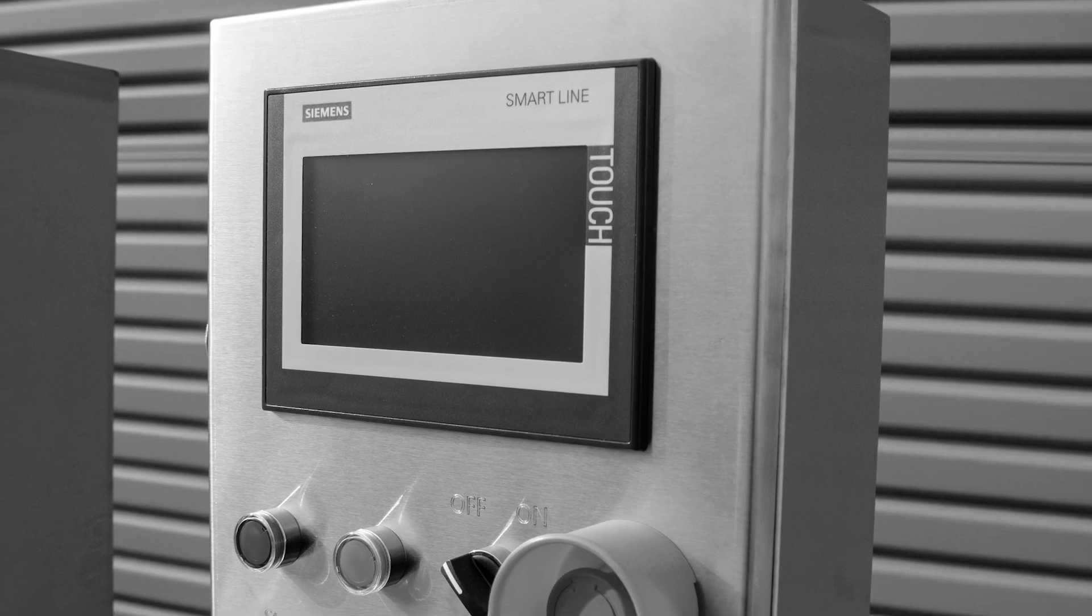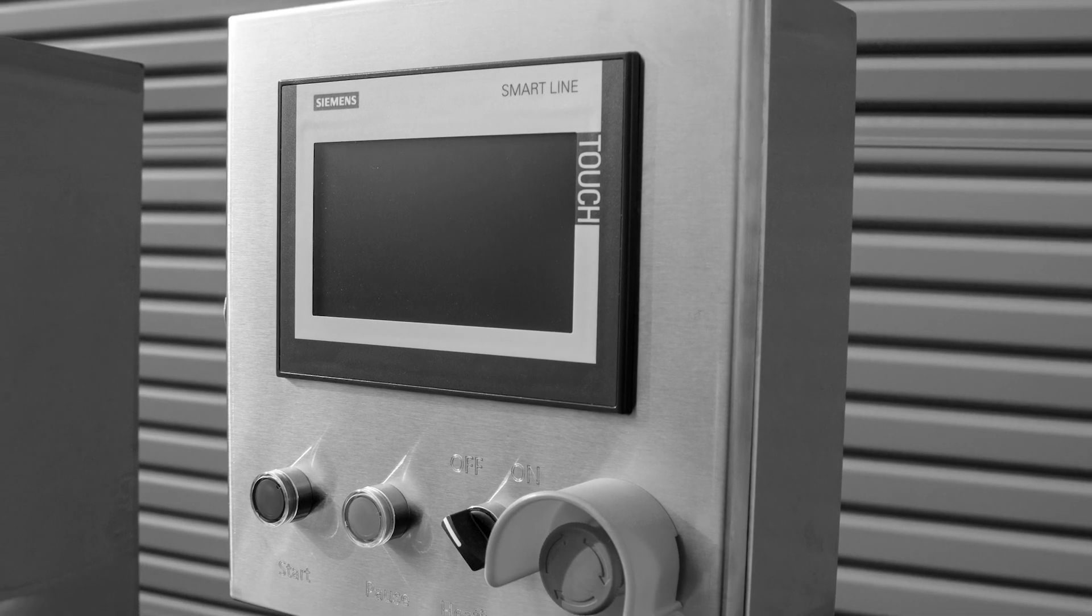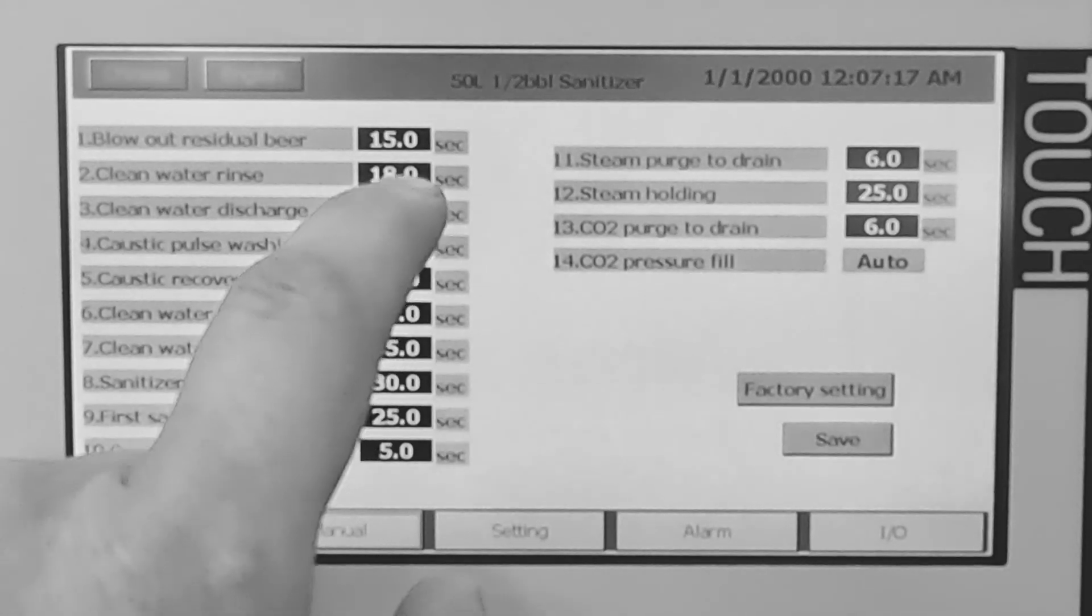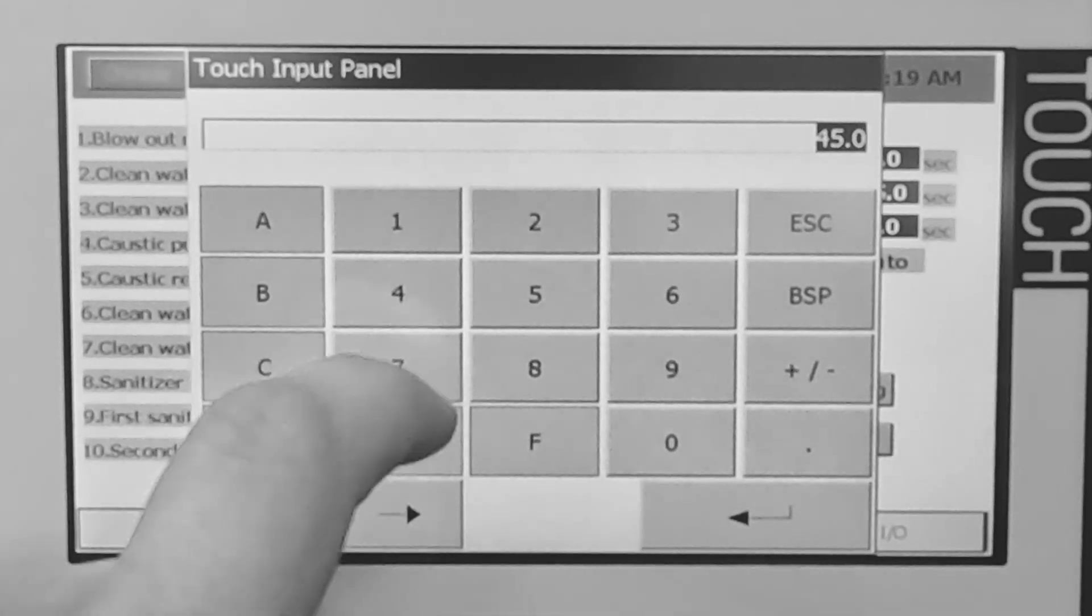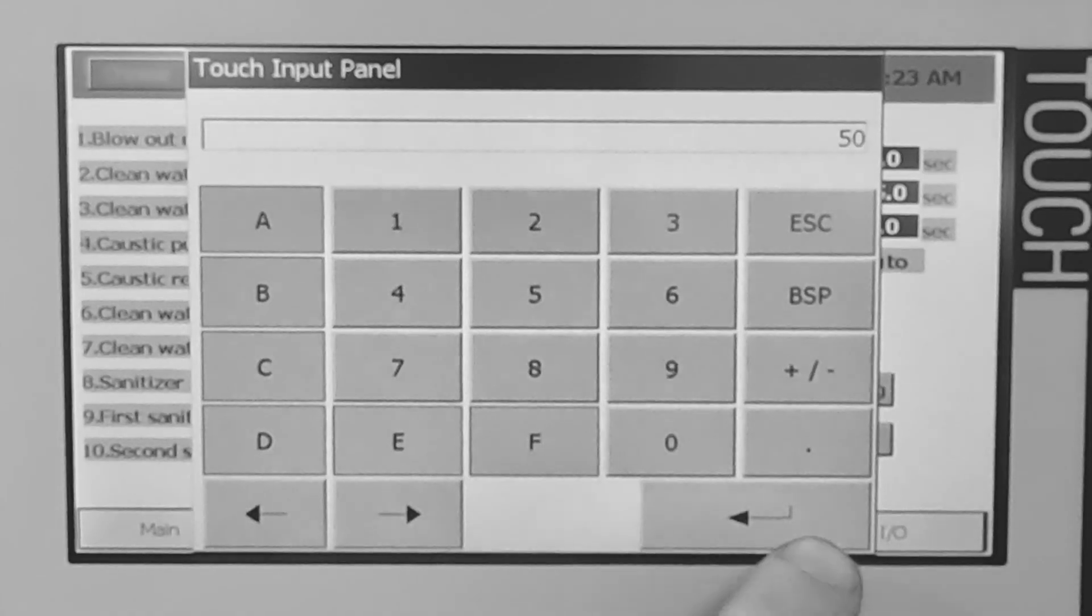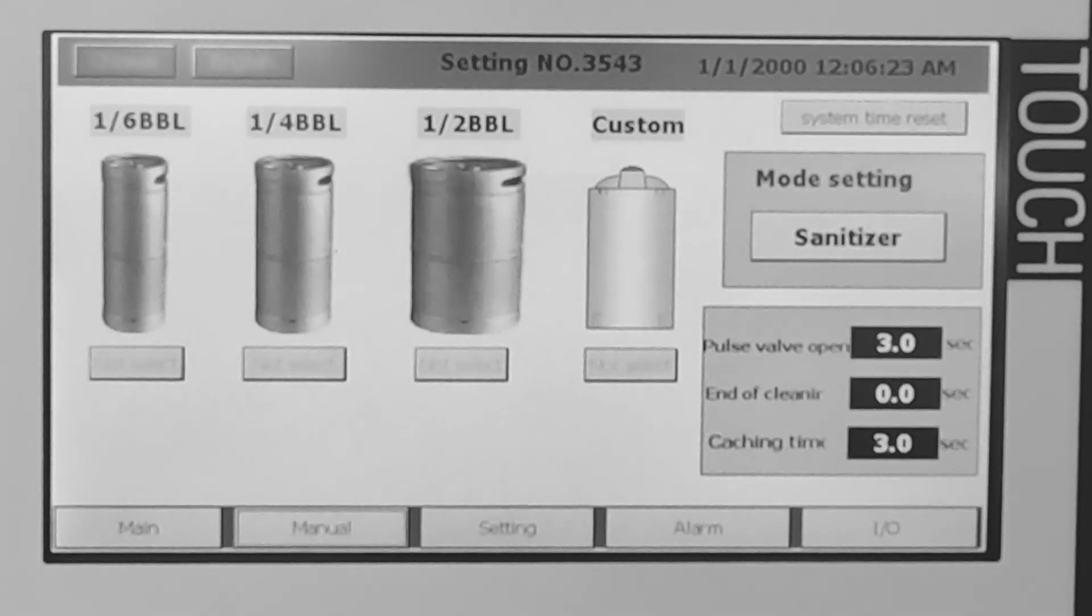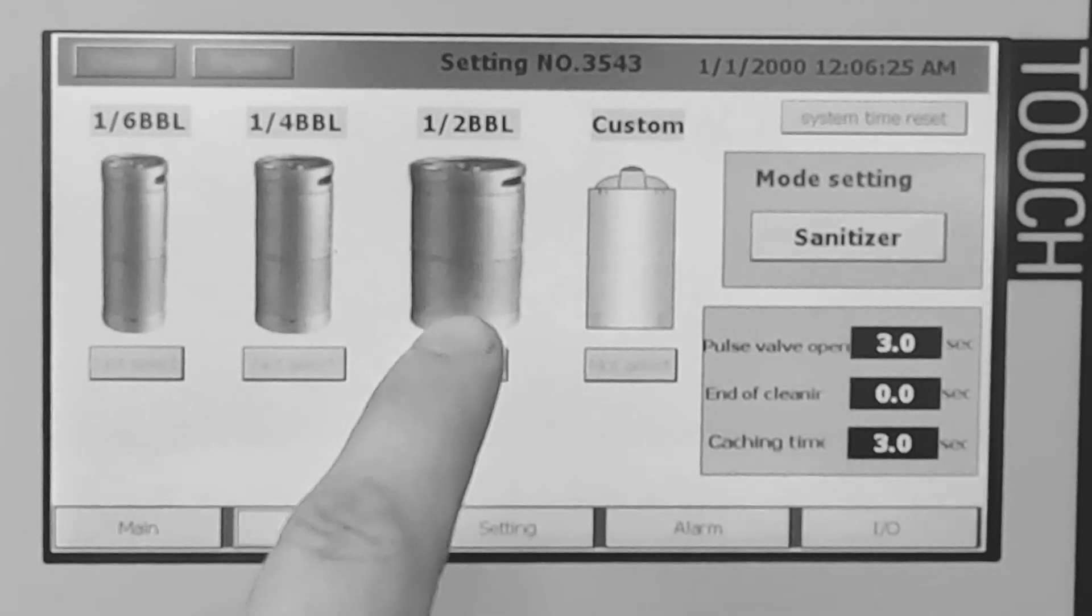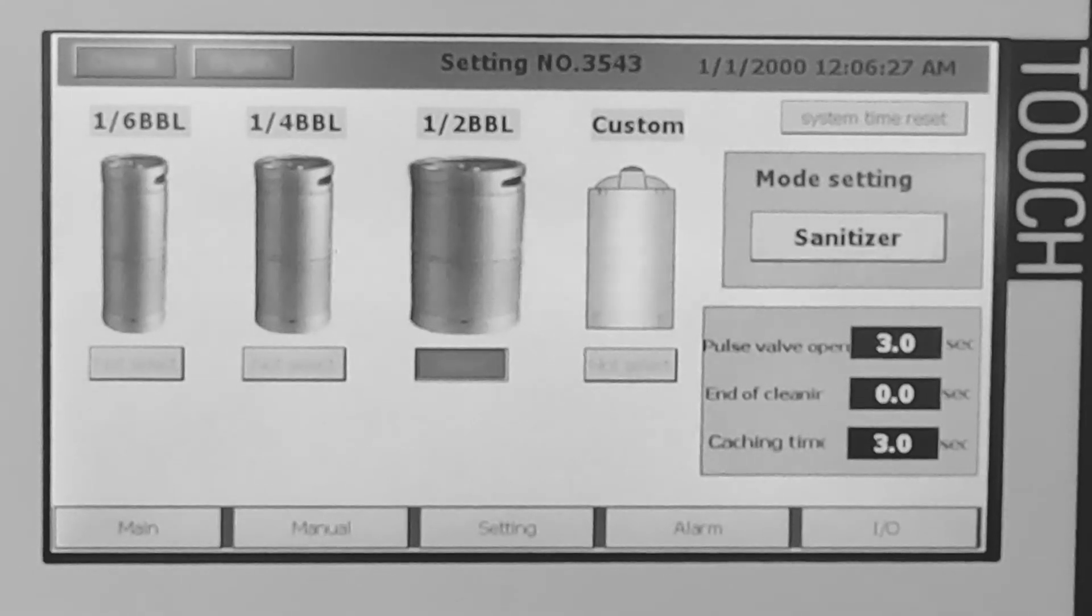Interacting with the Keggernaut is easy thanks to the Siemens PLC and touchscreen interface. The PLC program allows full control over 14 programmable cleaning cycles. The program also allows you to save four keg profiles to make switching between keg sizes a breeze.